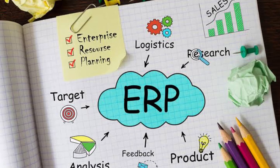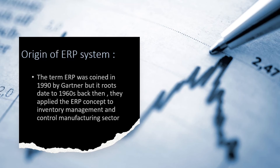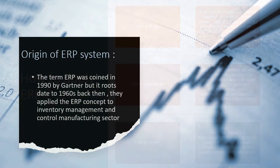All functions communicate through the ERP. The term ERP was coined in 1990 by Gartner, but its roots date back to 1960, when the ERP concept was applied to inventory management and control in the manufacturing sector.